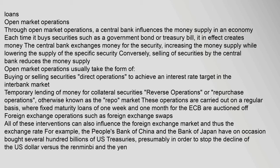Through open market operations, a central bank influences the money supply in an economy. Each time it buys securities, such as a government bond or treasury bill, it in effect creates money — the central bank exchanges money for the security, increasing the money supply while lowering the supply of the specific security. Conversely, selling of securities by the central bank reduces the money supply. Open market operations usually take the form of buying or selling securities to achieve an interest rate target. In the interbank market, temporary lending of money for collateral securities — reverse operations or repurchase operations (the repo market) — are carried out on a regular basis. For example, the People's Bank of China and the Bank of Japan have on occasion bought several hundred billions of US Treasuries, presumably to stop the decline of the US dollar versus the renminbi and the yen.